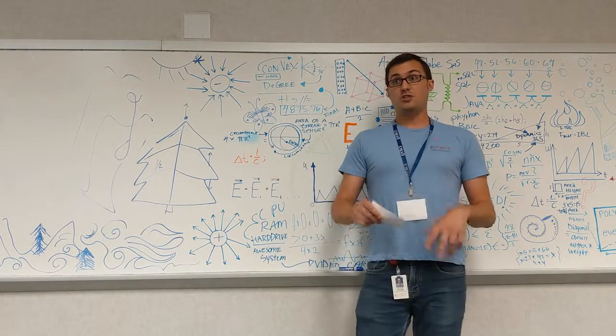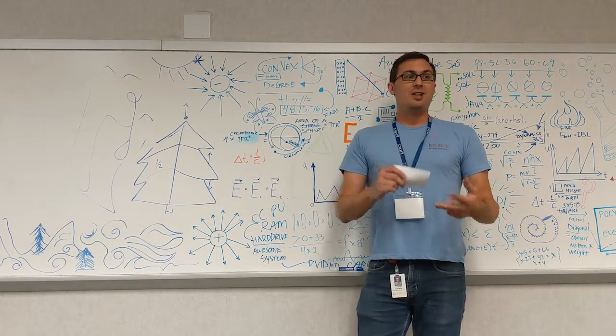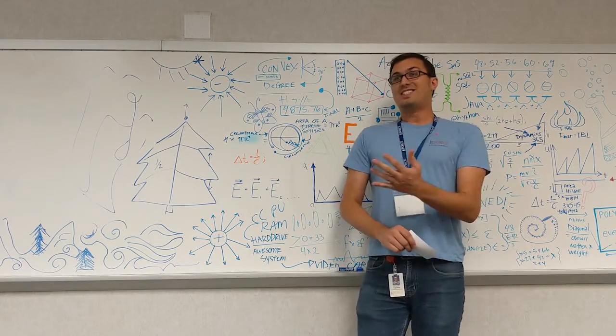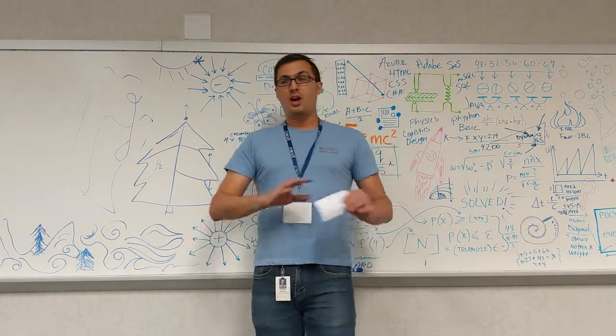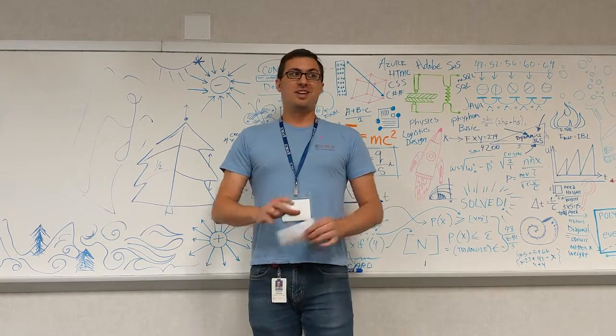So the Big Texan Challenge is a steak challenge, 72 ounce steak, loaded baked potato, dinner roll, side salad, and an order of shrimp cocktail. You finish it in one hour and it's free. All you earn is bragging rights, which I earned.